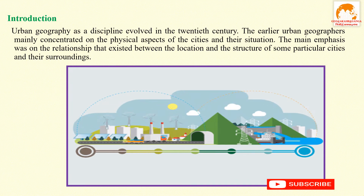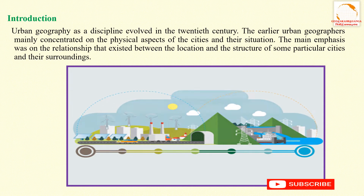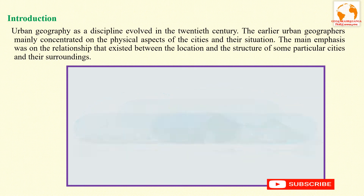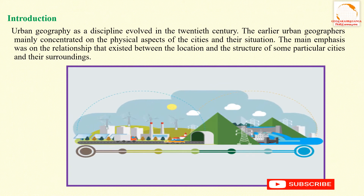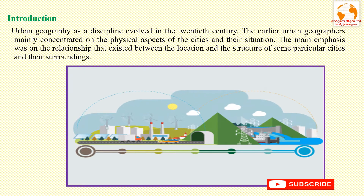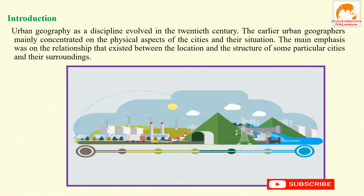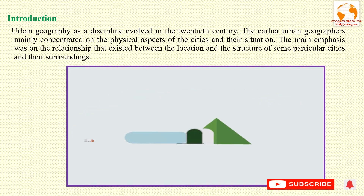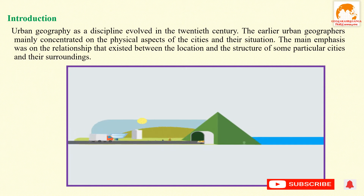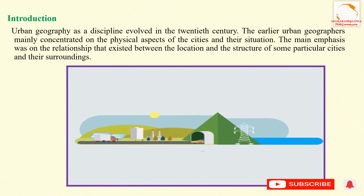But with time the framework of urban geography changed, and in the present two common approaches are identifiable. The first mainly deals with cities as distinct phenomena located on the surface of the earth. Geographers usually study the distribution, size, functions, and growth rate of urban settlements along with spatial interaction between different centers.